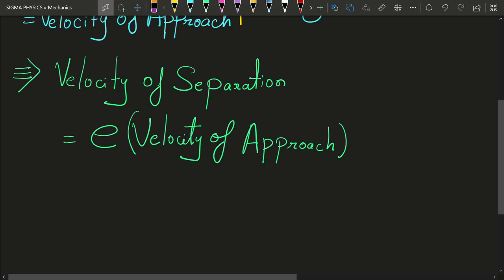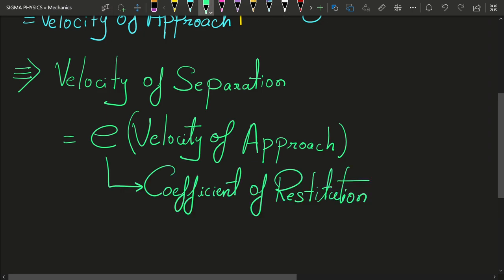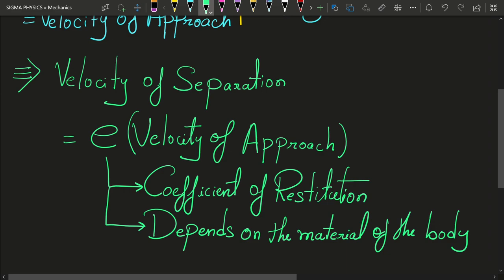This coefficient of restitution depends upon the material of the body. Hence, what velocity the bodies will have after the collision will actually depend upon what material they are made of.